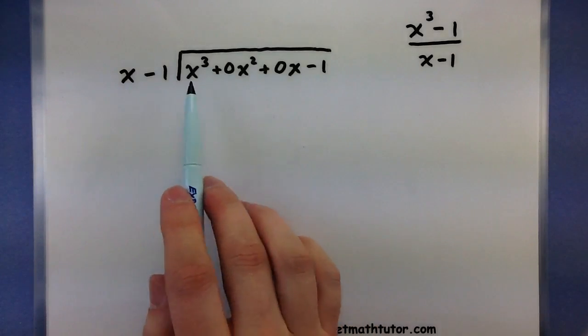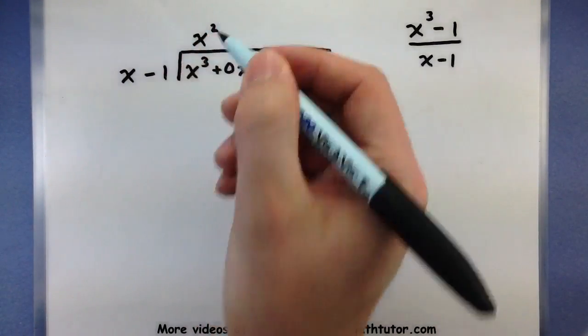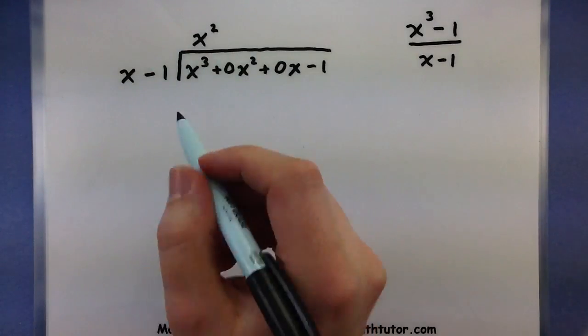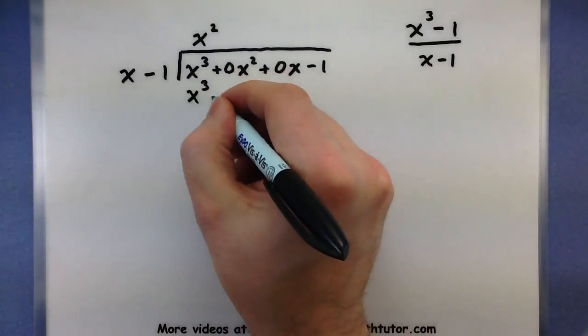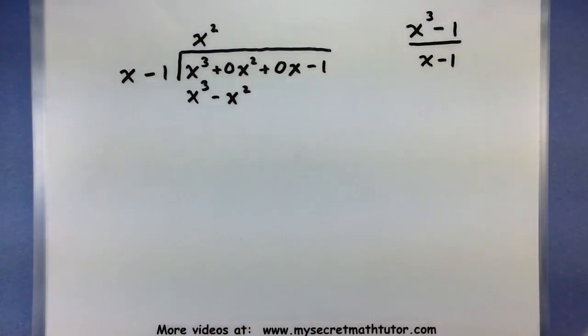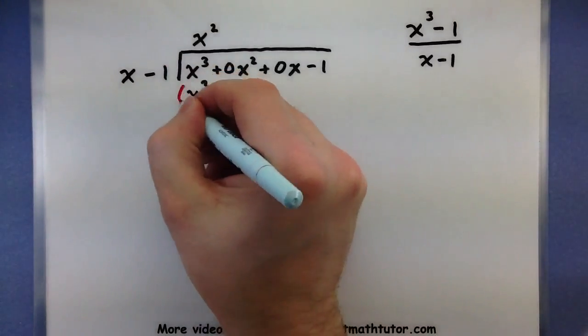What do I have to multiply x by in order to get an x³? How about an x²? Multiply through, get an x³, multiply by the next term, minus x². Once you have your terms, go ahead and subtract those away.